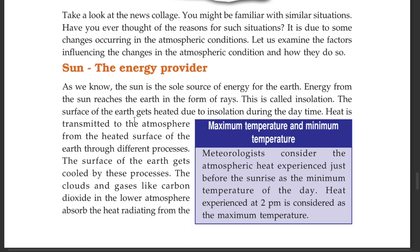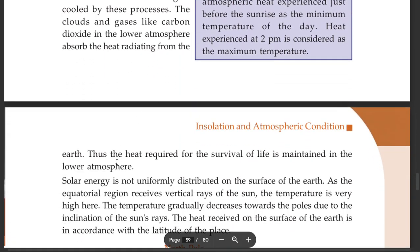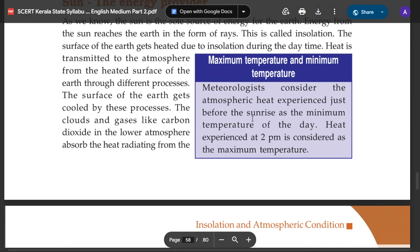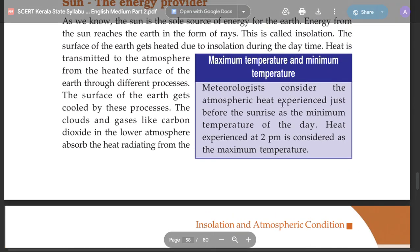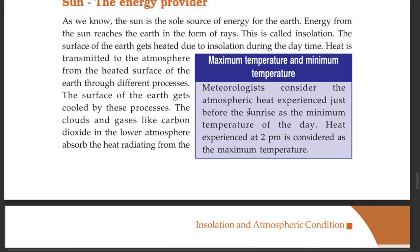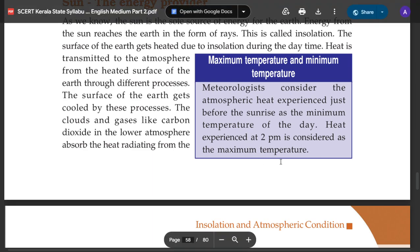This is the maximum temperature and minimum temperature. Meteorologists consider the atmospheric heat experienced just before sunrise as the minimum temperature of the day. Heat experienced at 2 p.m. is considered as the maximum temperature.